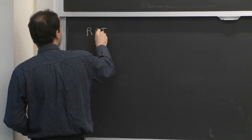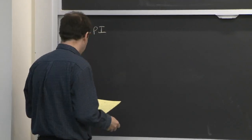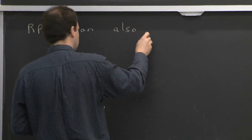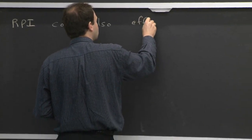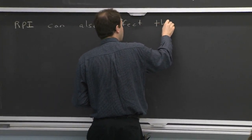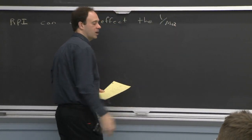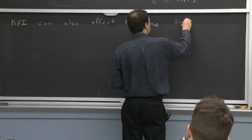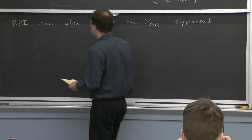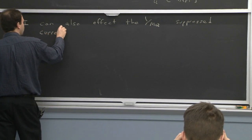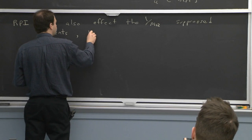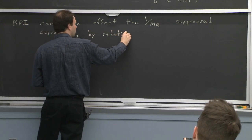We've talked about reparametrization invariance for the Lagrangian. Reparametrization invariance also has important consequences for operators. Just like we wrote down subleading Lagrangians, we should also write subleading currents — 1 over MQ suppressed currents. If you construct those currents, you find that reparametrization invariance plays an important role and there are relations between Wilson coefficients.